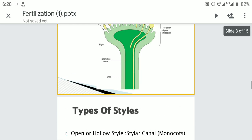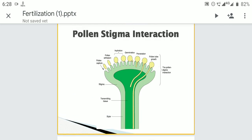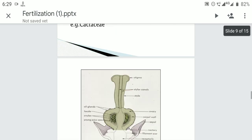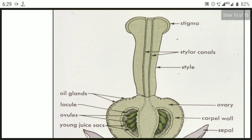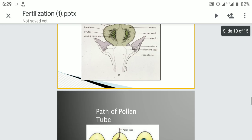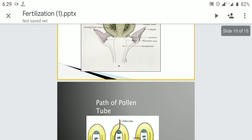In the slide, the dark green structure shows the transmitting tissue in the solid style. The next slide shows the stylar canal present in open style.